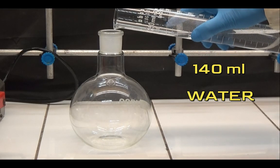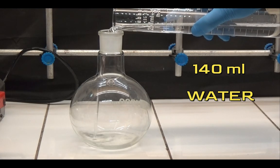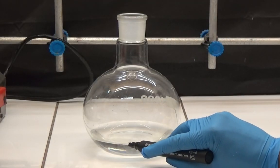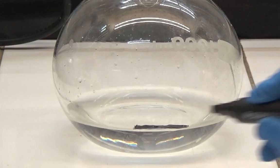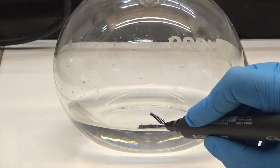First, fill a 1000ml flask with 140ml of water and mark it with a glass marker. This mark will be the volume limit for evaporation.